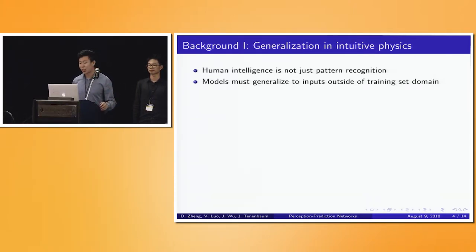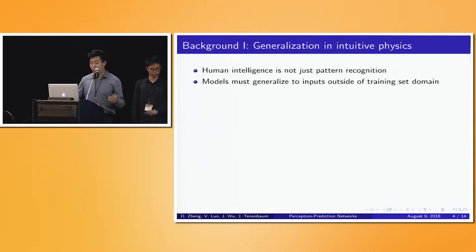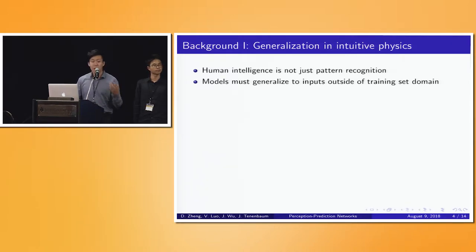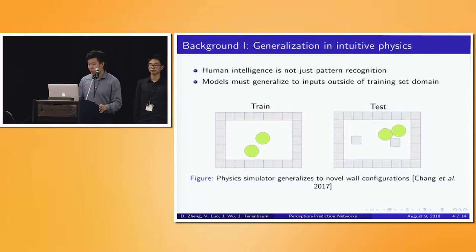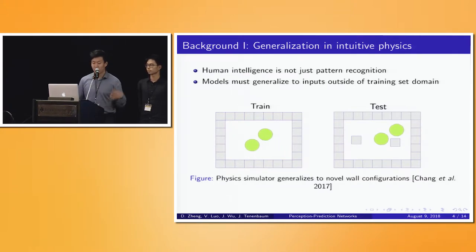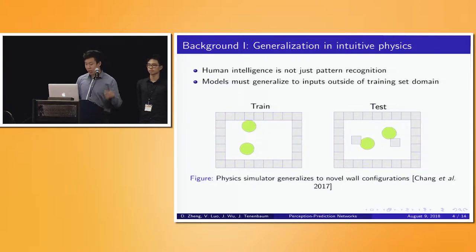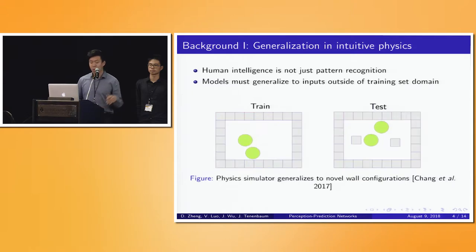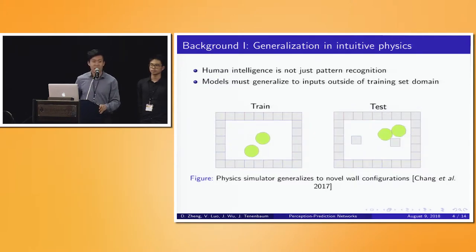Just as important to doing well in intuitive physics is the concept of generalization. Human intelligence is much more than just pattern recognition. As with models in other areas of machine learning, in intuitive physics it's very important for models to generalize to inputs that are outside of the domain exposed to during training. Chang's paper has to do with creating a physics simulator of objects that move around in a box. During training, the set of walls exposed to the system is not the same as during testing, but we find that Chang's model works well to new systems with different wall configurations, despite the fact that we did not need to retrain the model.